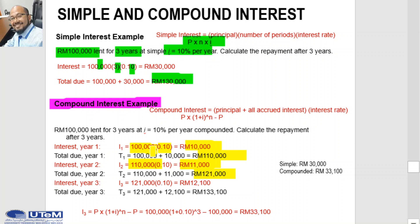In year 3, the principal is now RM121,000 times 0.1, giving an interest of RM12,100. Comparing with simple interest, the interest each year was RM10,000 at year 1, RM10,000 at year 2, and RM10,000 at year 3. But in compound interest, year 1 is RM10,000, year 2 increases to RM11,000, and year 3 is RM12,100. The total amount at year 3 is RM133,100.